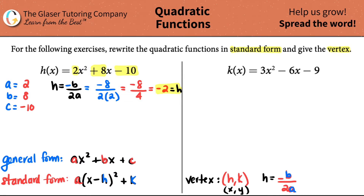Now we just have to find the k value. Always find h first, then solve for k. k is just the function evaluated at h. This means you're literally going to plug in your h value into the function — we've done tons of problems like this where we just input numbers into the function and solve. That's all this is — just a plug-in.